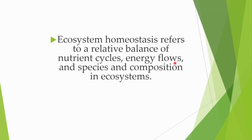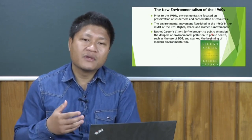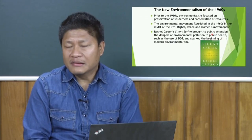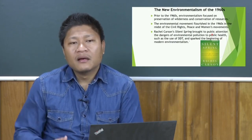Ecosystem homeostasis refers to a relative balance of nutrient cycles, energy flows, and species compositions in the ecosystem, which we have seen in that diagram showing how the producer, consumer, and decomposer interrelationships are being seen. Moving on to the second part — that is looking at what are the trends of environmental movements which have been witnessed in the second half of the 20th century, which of course began in the West.